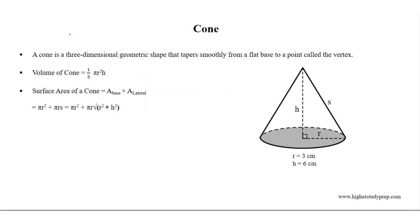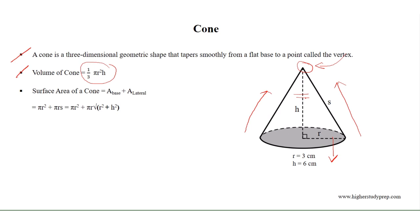A cone is a three-dimensional geometric shape that tapers smoothly from a flat base to a point called the vertex. The volume of a cone is equal to one third pi r squared h, where r is the radius of the base and h is the height. The surface area of a cone equals the area of the base, which is pi r squared, plus the area of the lateral surface, which is equal to pi r s, where s is the slant height.